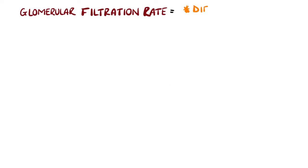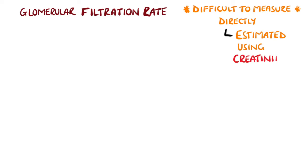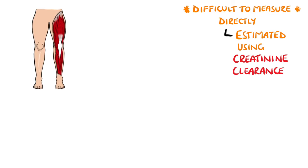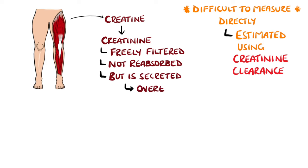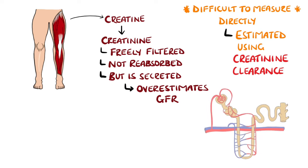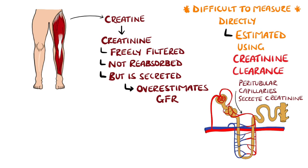To directly measure this process is difficult; we instead use creatinine clearance to estimate the GFR. Creatinine is a normal breakdown product of creatine released from muscle tissue, and this is freely filtered by the glomerulus and is not reabsorbed, so fits the kind of substance we need. However, creatinine is secreted into the filtrate by the peritubular capillaries, so it does tend to overestimate the GFR slightly.